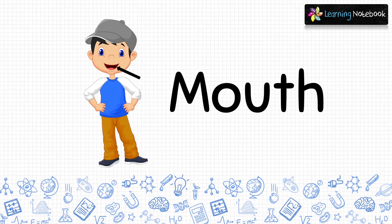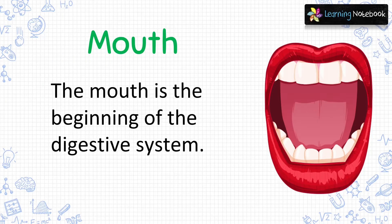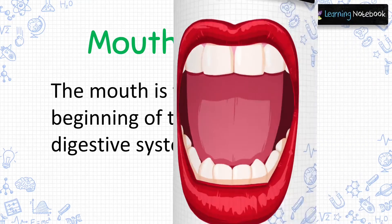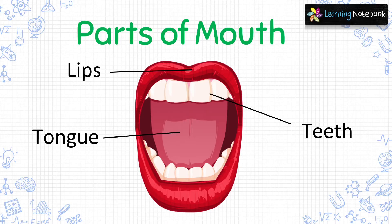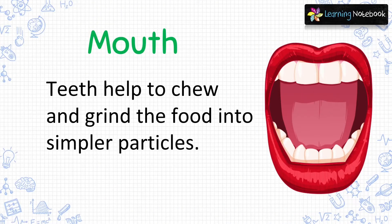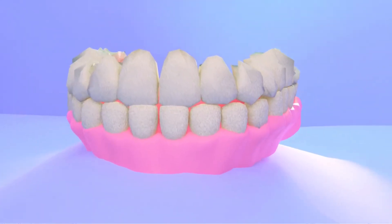The second external body part is mouth. The mouth is the beginning of the digestive system. The parts of the mouth are lips, teeth and tongue. The teeth help to chew and grind the food into simpler particles. The mouth has a salivary gland that secretes saliva which helps to soften the food and helps in further breaking down of food. So students, we should keep our mouth clean and brush our teeth daily.